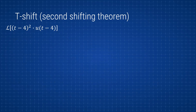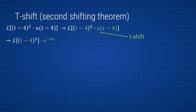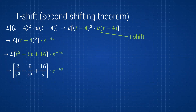Another example: we are taking the Laplace of (t - 4)²·u(t - 4). This one is already shifted. Recognizing the t-shift, we remove the unit step function and replace it with e^(-4s), then expand the quadratic: (t² - 8t + 16)·e^(-4s). Taking the Laplace of each term gives (2/s³ - 8/s² + 16/s)·e^(-4s). As you can see, taking the t-shift is pretty straightforward.